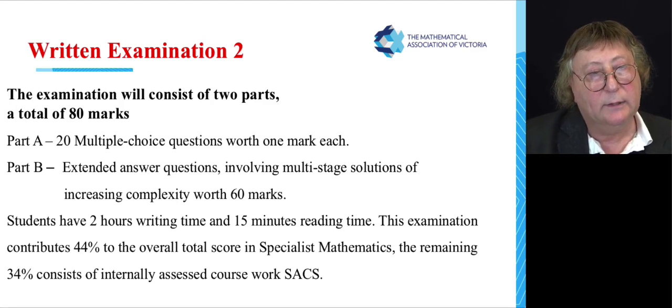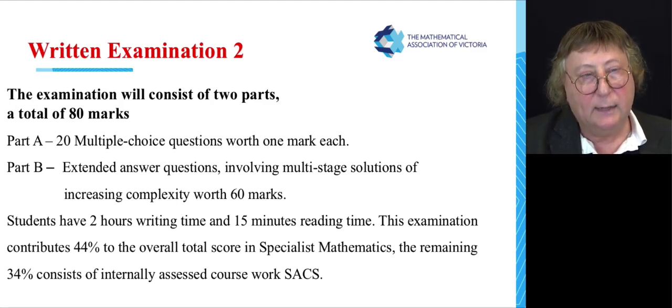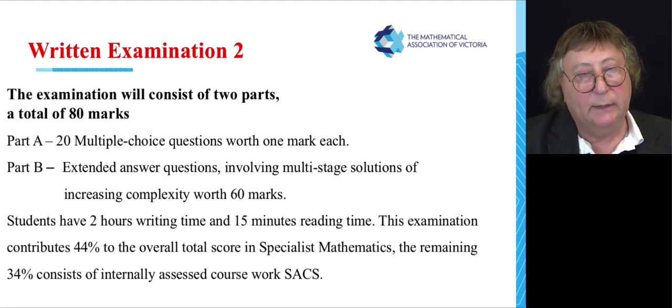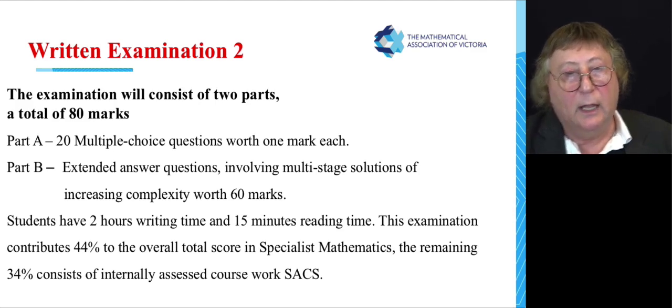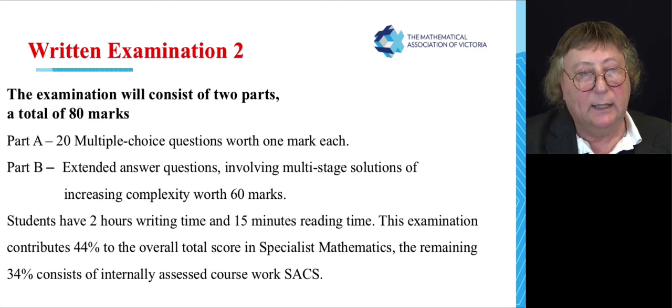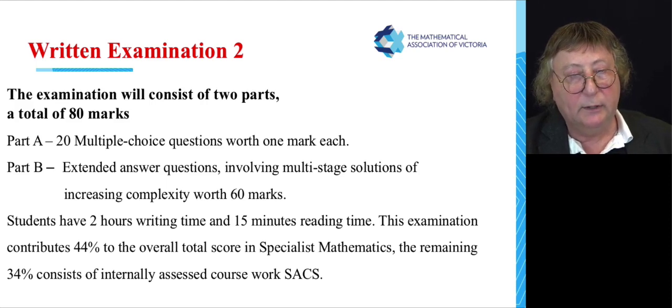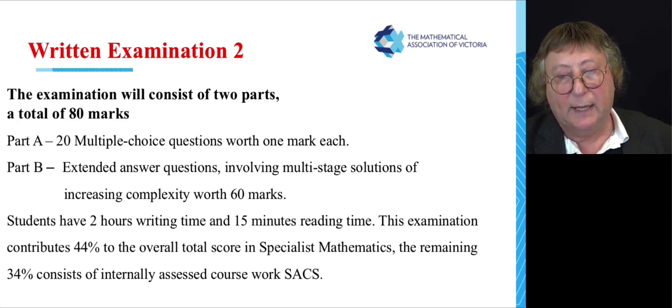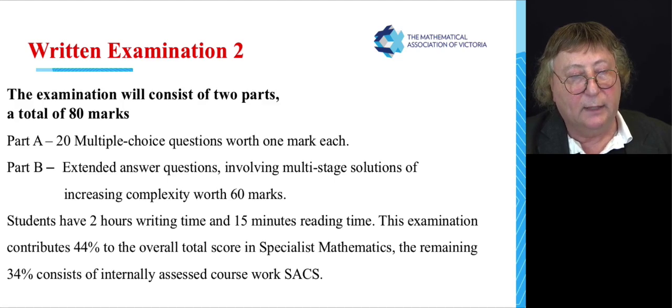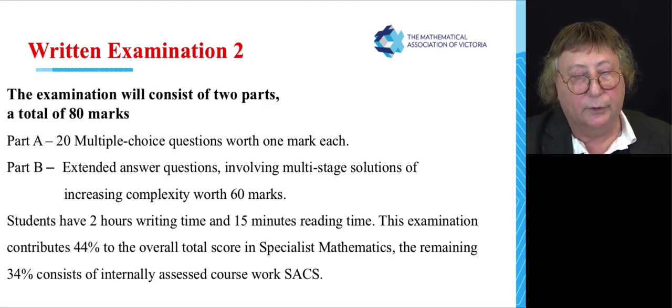Exam 2 has got two parts. A total of 80 marks. Part A contains 20 multiple choice questions, each worth one mark, and part B have got extended answers, each part A, B, C, D, worth 60 marks. And students have two hours writing time, but only still 15 minutes reading time for exam 2. This exam contributes 44% to your overall total in Specialist Maths. So we've got the remaining 34%, which has all been completed with all your courseworks or your SACs.